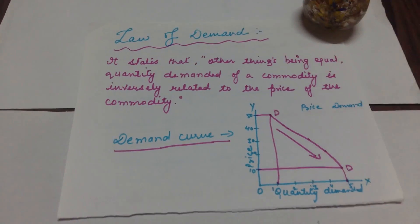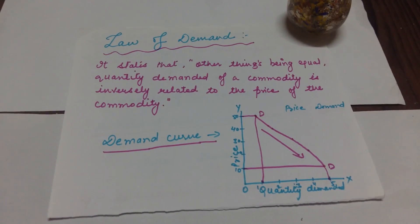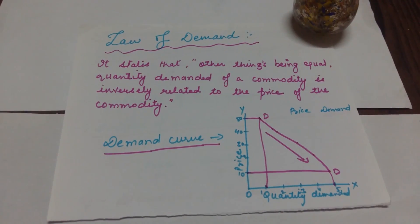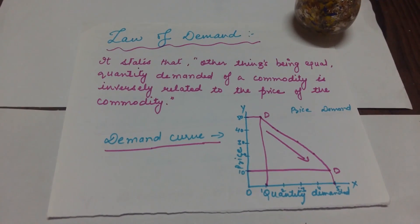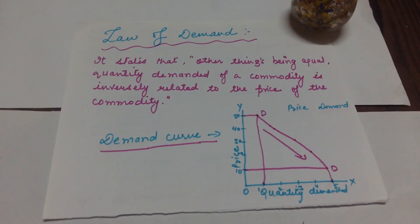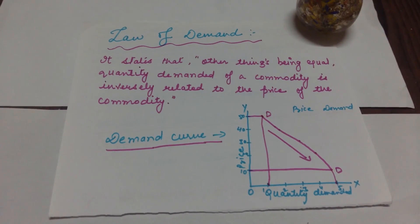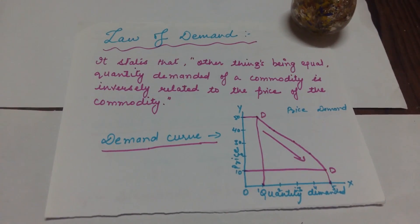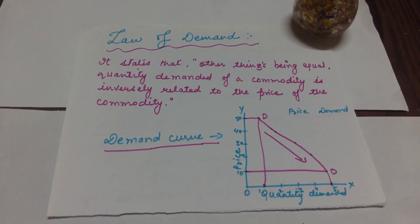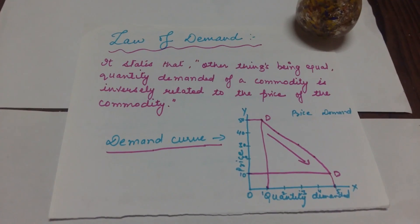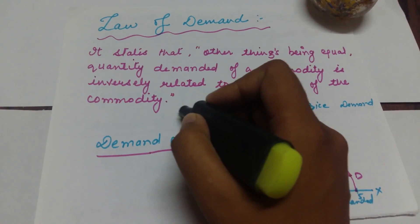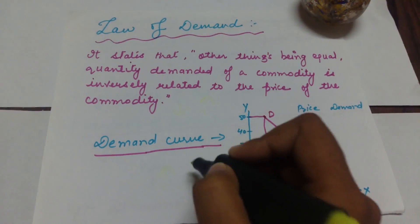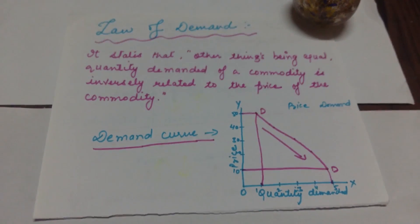Here is the main topic — Law of Demand. The Law of Demand states that other things being equal, the quantity demanded of a commodity is inversely related to the price of the commodity. That means if the price of a commodity is increased, your demand for that commodity is decreased. And if the price of the commodity is decreased, your quantity demanded is increased. Decrease in price will lead to increase in demand, and increase in price will lead to decrease in demand.